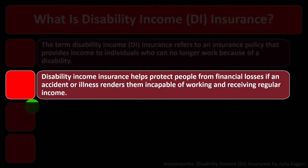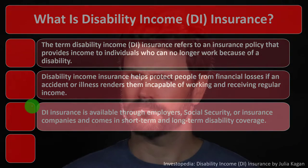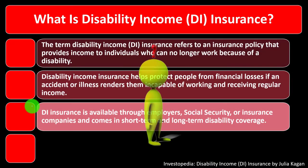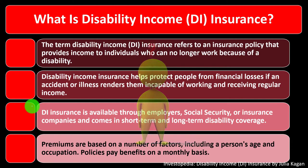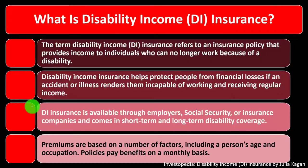Disability income insurance helps protect people from financial losses if an accident or illness renders them incapable of working and receiving regular income. DI insurance is available through employers, Social Security, or insurance companies, and comes in short and long-term disability coverage. Premiums are based on a number of factors including a person's age and occupation, and the policy pays benefits on a monthly basis.